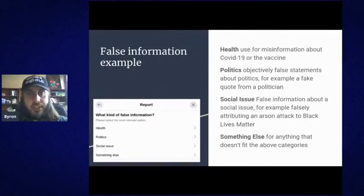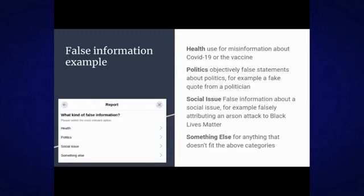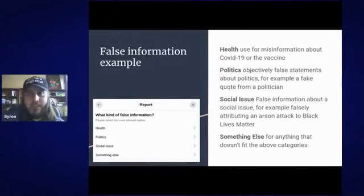Looking at the false information option, it asks what kind of false information. Health is one I've been using a lot lately — use this for misinformation about COVID-19 or the vaccine. Politics is for objectively false statements about politics, such as a fake quote from a politician — not for a political statement you disagree with, but one that is objectively false. Social issue is for more meta-political things like falsely attributing an arson attack to a group, when it's objectively false, not just an opinion.